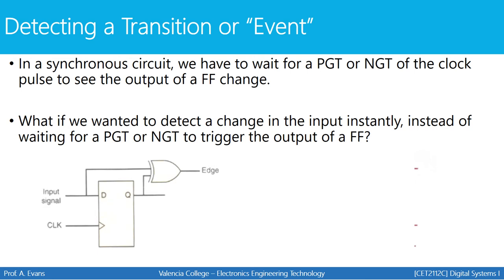We're going to look at an edge detector circuit using a D flip-flop. Our input signal is like a button or user input. We have a clock signal to control the D flip-flop, and then we have an XOR gate where the two inputs are the input signal itself and the output Q of the flip-flop. The XOR gate provides an output called 'edge.' This signal will go high whenever an edge in the input signal is detected — any time the signal goes from 0 to 1 or 1 to 0 — before the flip-flop can even respond.